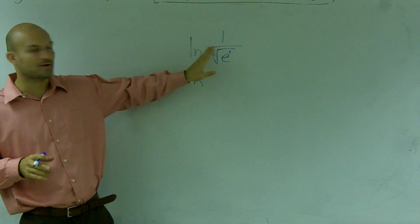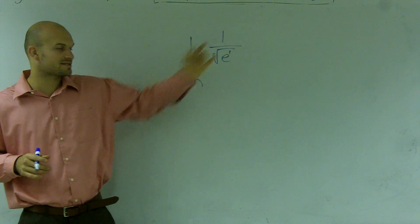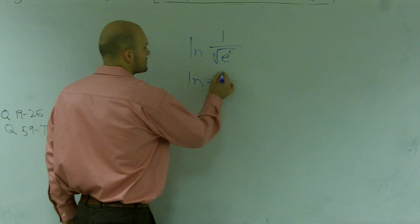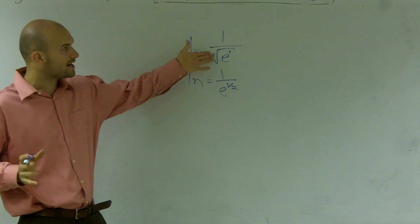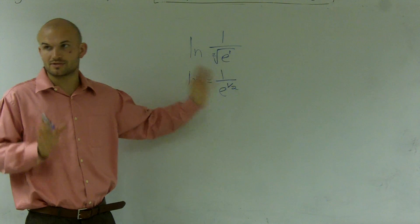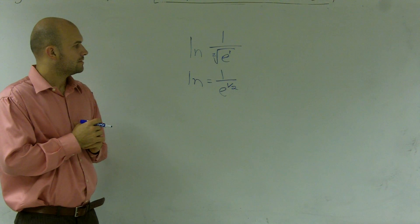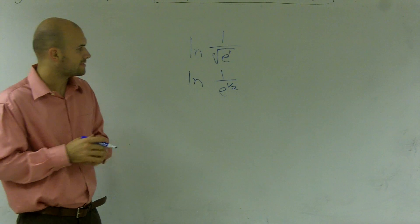So remember, on a square root, that's the two up there, and my e is the one power. So I can now rewrite this as one over e to the one-half power. All right? You guys have to understand how roots and your exponents are related.